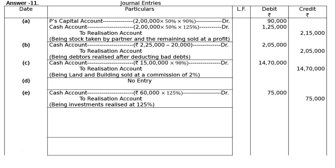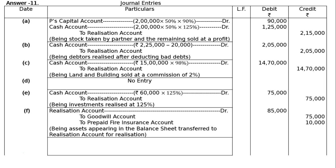Part F: goodwill Rs.75,000 and prepaid fire insurance Rs.10,000 are to be transferred to Realization account. Hence, Realization account is debited Rs.85,000 — to goodwill account Rs.75,000 and to prepaid fire insurance account Rs.10,000 — being assets appearing in the balance sheet transferred to Realization account for realization.